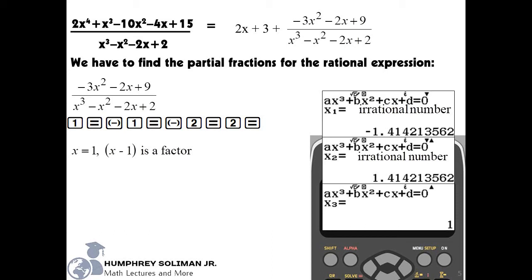This means x minus 1 is a factor. Take note that the first 2 values of x are irrational numbers. The product of the factors from the irrational values of x will give us a quadratic factor.